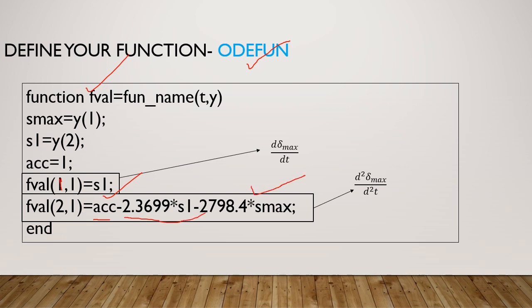Then the second row, first column is acceleration minus—this comes from the equation which we explained on the previous slide. This is your d²σ_max/dt² and this is your dσ_max/dt. Acceleration is constant, as we have defined in the previous slide.